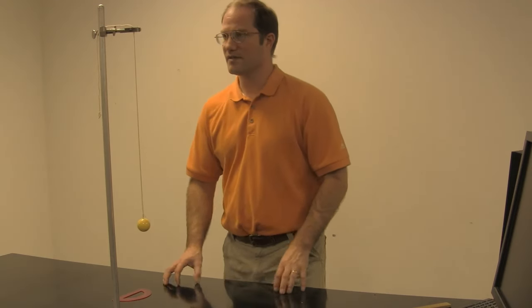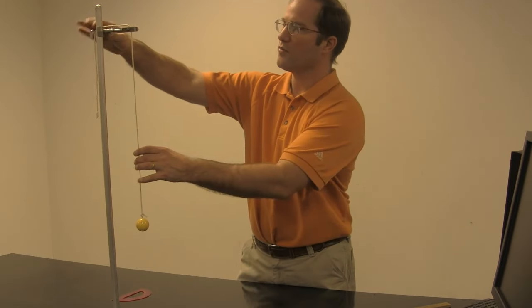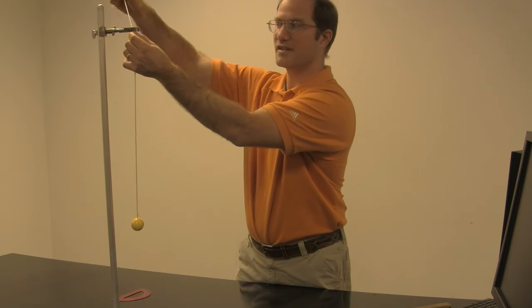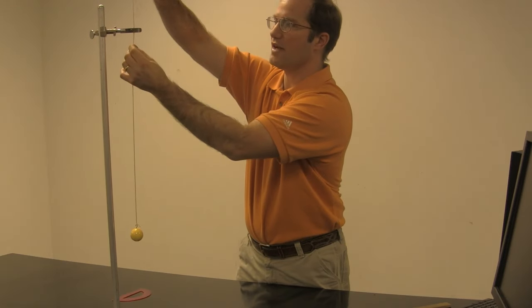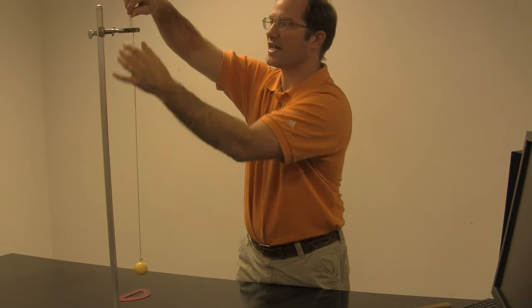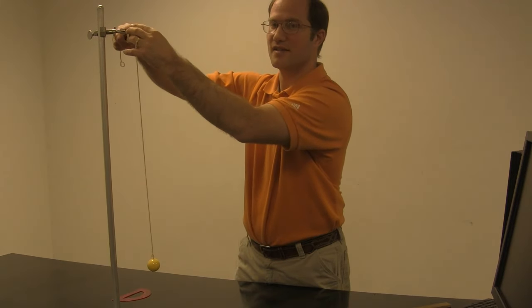And the length of the pendulum is the measurement from the pivot point. Now, we have this thermometer clamp holding the pendulum. I can change the pivot point position by simply loosening the clamp and then sliding the string through and retightening. So I don't have to tie any knots in the pendulum.